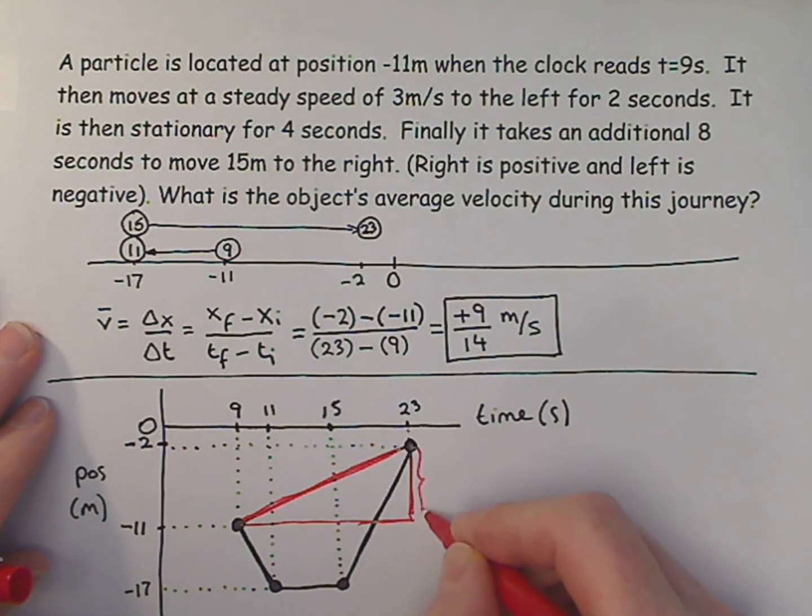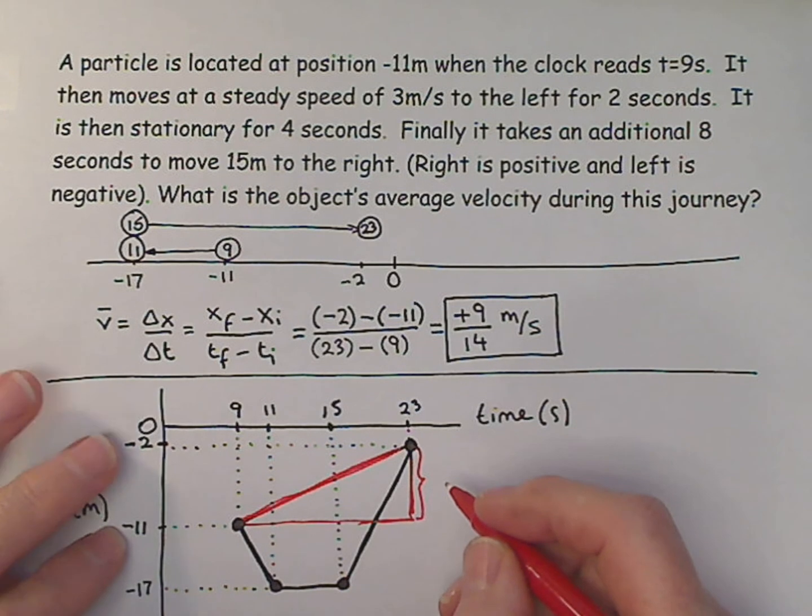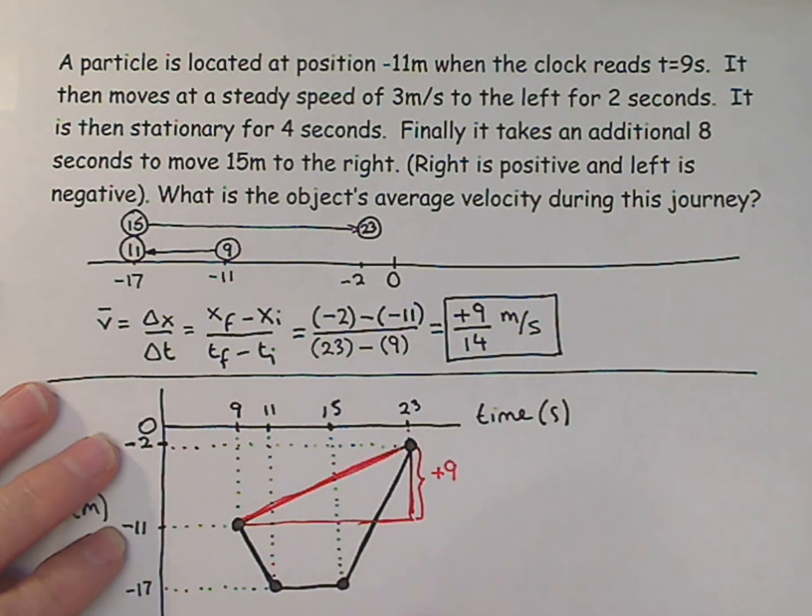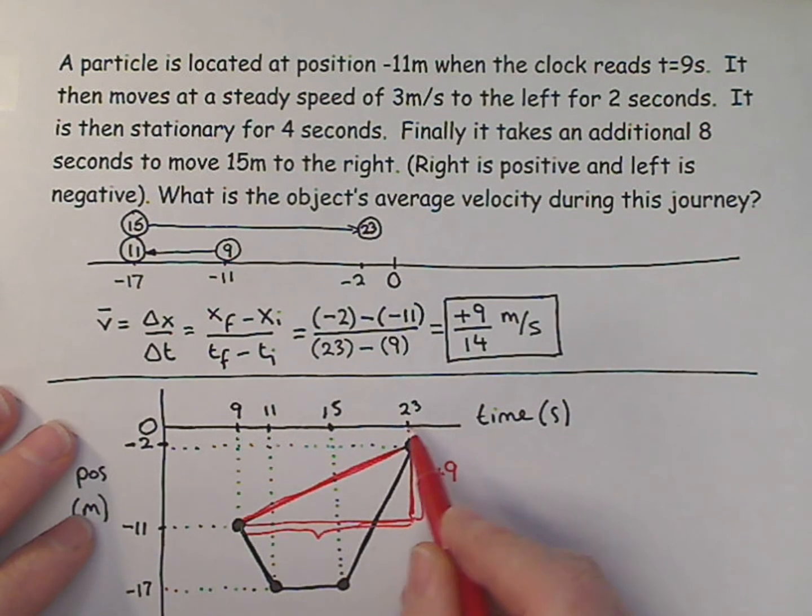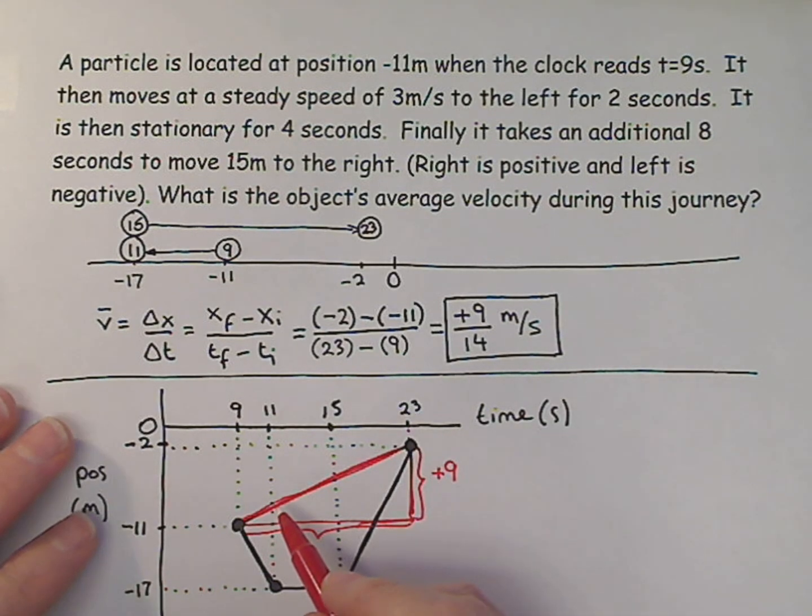And my rise is... Well, basically I went from minus 11 to minus 2, which is plus 9. And my run, I went from 9 to 23. 23, that would be 13... would be 14 seconds.